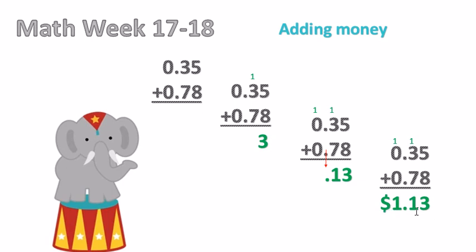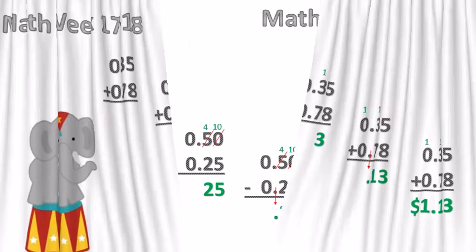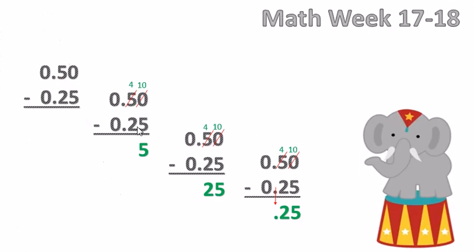And everything on the right side of the decimal would be cents. Which leads us to subtracting money.